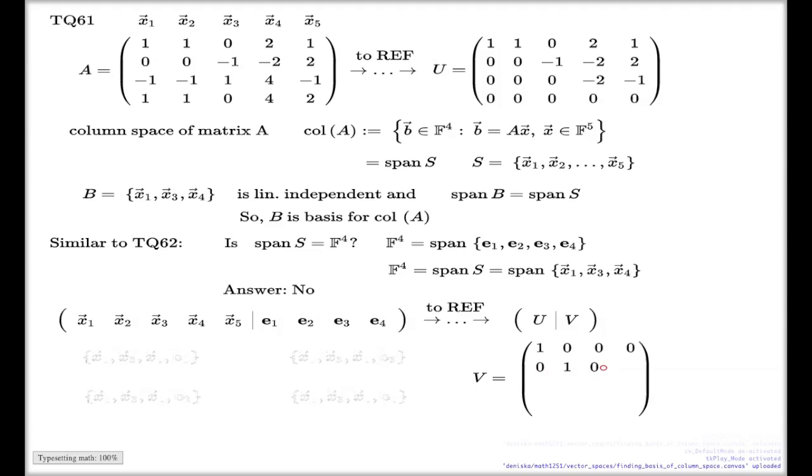First row: 1, 0, 0, 0. Second row: 0, 1, 0, 0. Third one is 1, double 0, negative 1. And the last one: negative 6, negative 2, negative 2, 4.